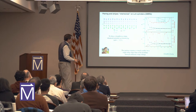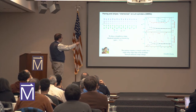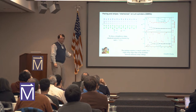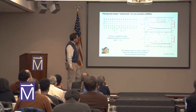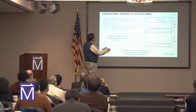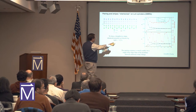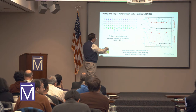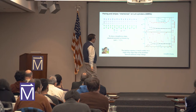Then we used the grand canonical ensemble and put a pairing field along the left edge, and we look at the response of the pairing along the stripe. The first one is for essentially a filled stripe. You see a response just where you put the pairing field, but then it decays and gets fairly small. This is the hole density along the length of the system.